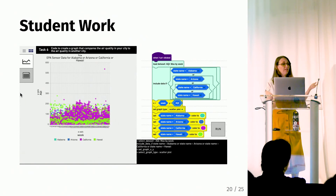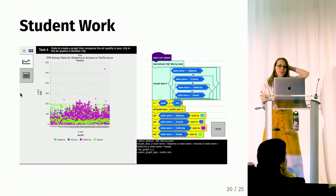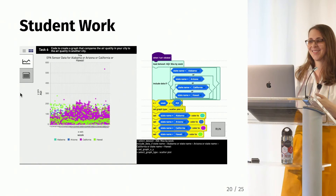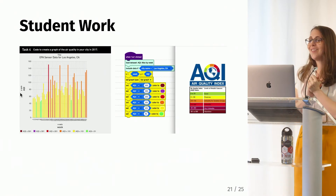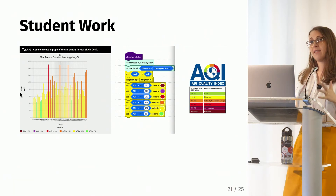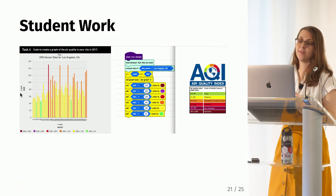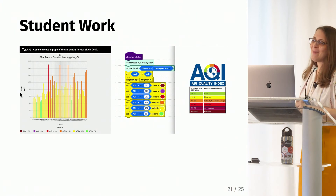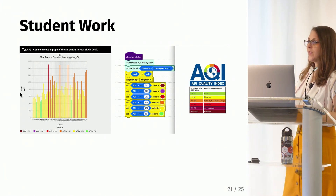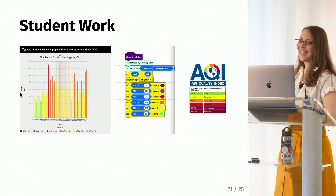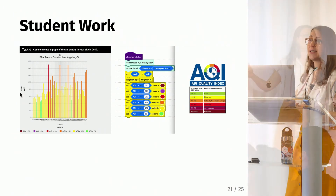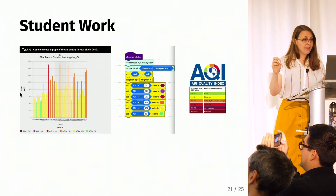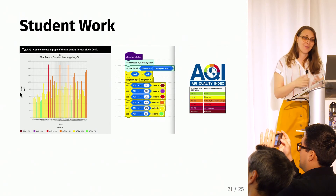We also noticed one really large point in the top right corner in California. We looked it up, and it turns out it's a real value from a week that had a forest fire — I thought it was really interesting that the students unearthed that. And this final graph answers an earlier prompt where the student looked at just their city. The student actually stayed after class to add all of the color blocks using the EPA's color scheme. It's a really great visualization — you can immediately see that there are only a couple of weeks in Los Angeles where air quality was considered good, and even one week where it was considered unhealthy.